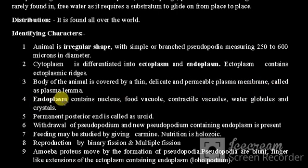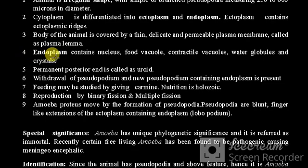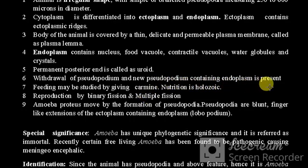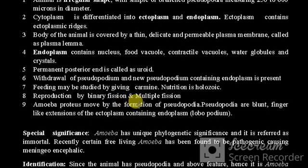The endoplasm contains the nucleus, food vacuole, contractile vacuoles, water globules, and crystals. The permanent posterior end is called the uroid. Withdrawal of one pseudopodium and formation of a new pseudopodium containing endoplasm drives movement. Feeding may be studied by giving carmine. Nutrition is holozoic. Reproduction is by binary fission and multiple fission.